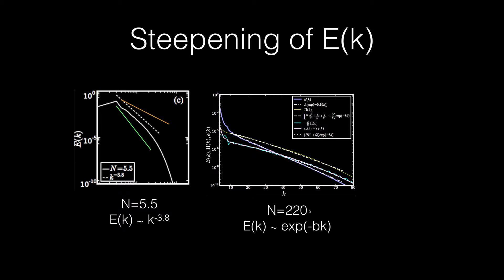For very large N, say greater than 100, the spectrum is not a power law but exponential. That is, exponential minus Bk.